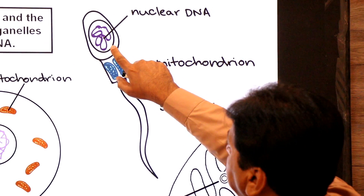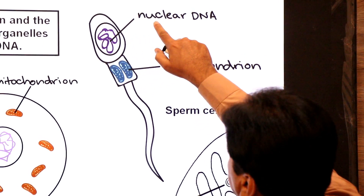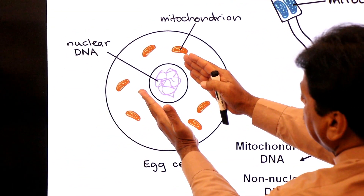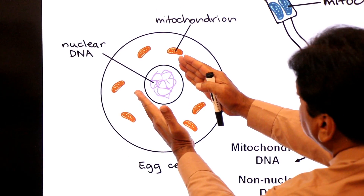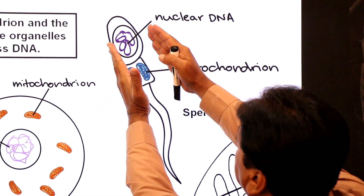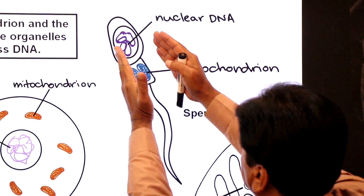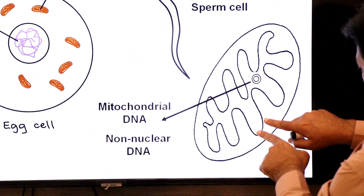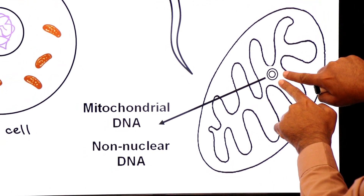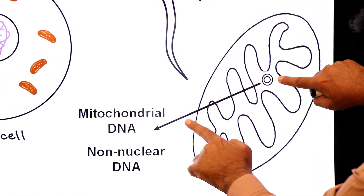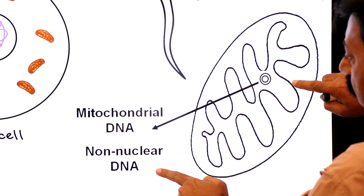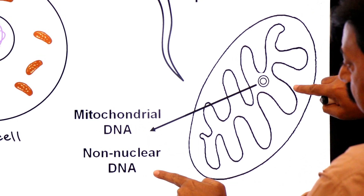Note that the nuclear DNA is shown in this diagram — this is the sperm nucleus DNA, this is the nuclear DNA. And this diagram shows the mitochondria with its mitochondrial DNA, also known as non-nuclear DNA.